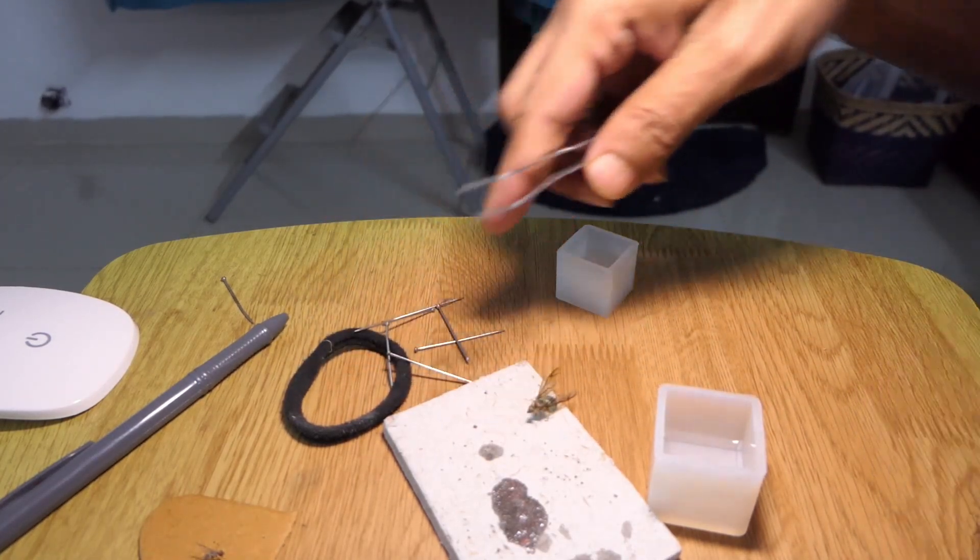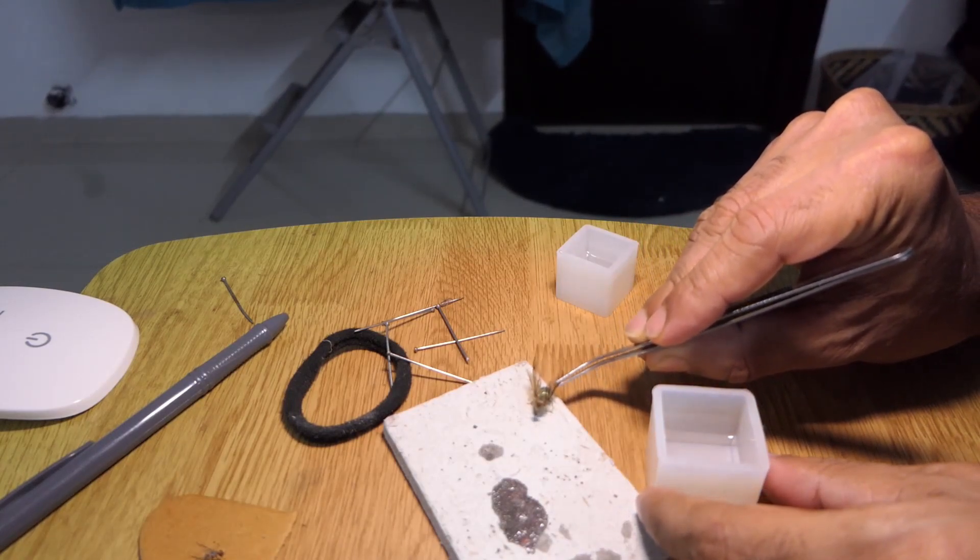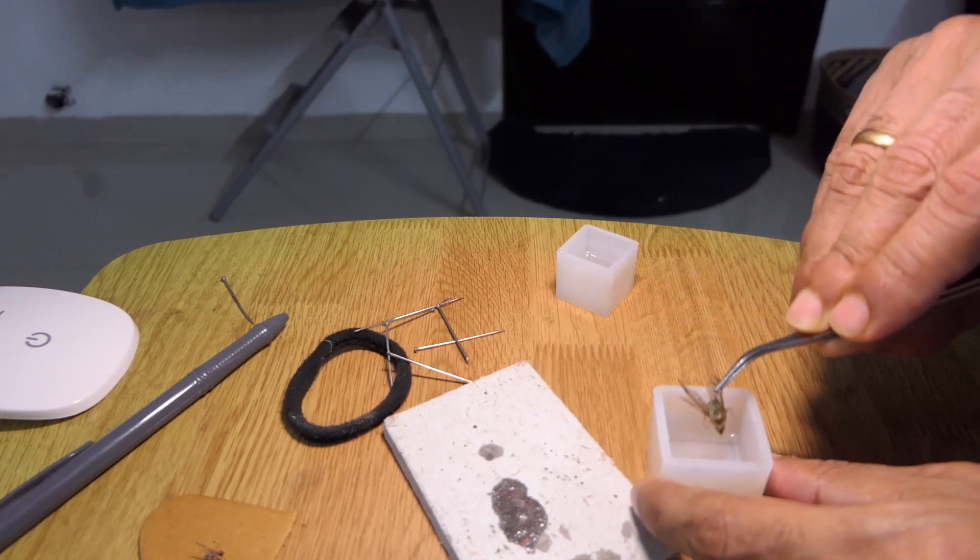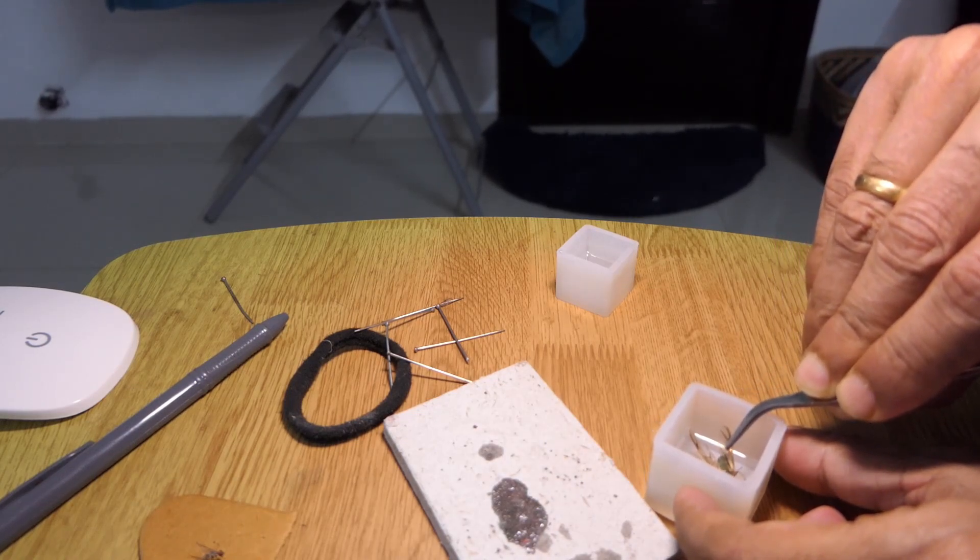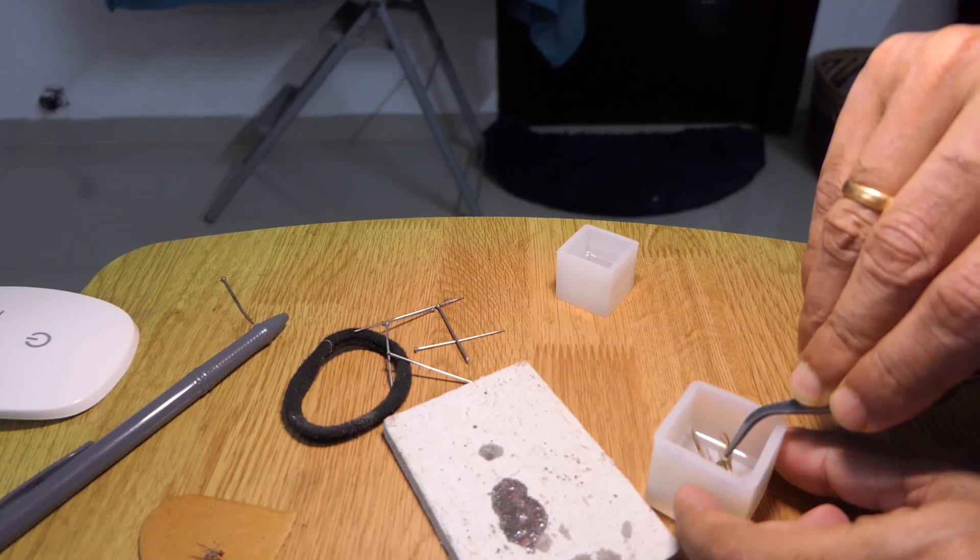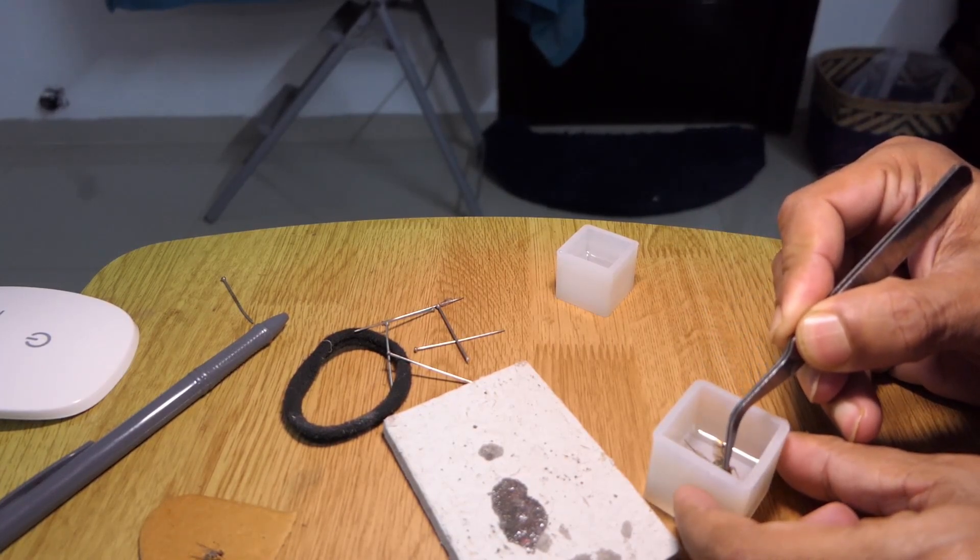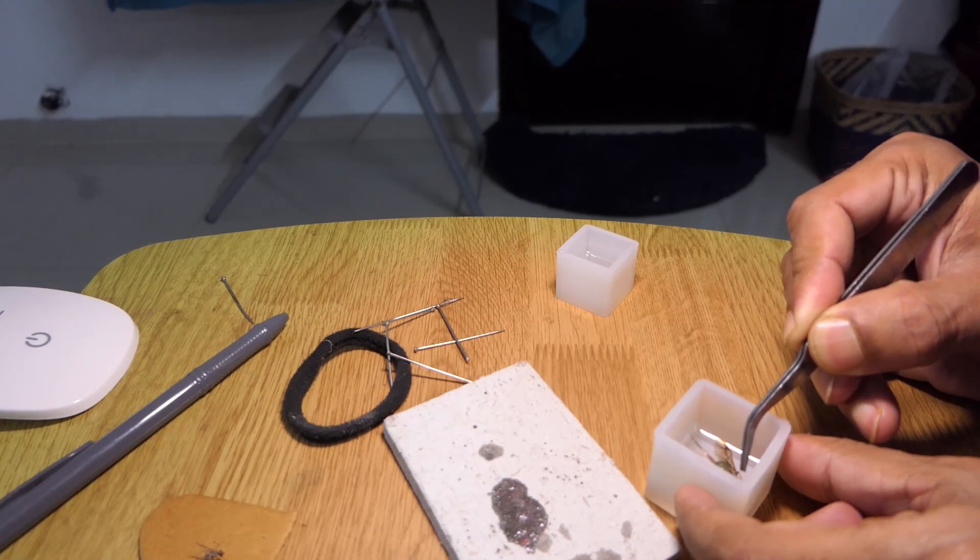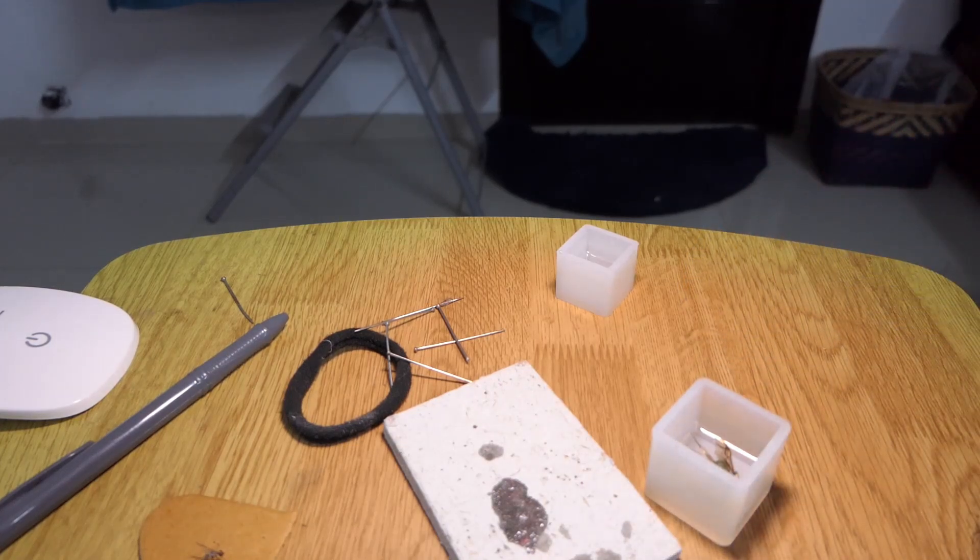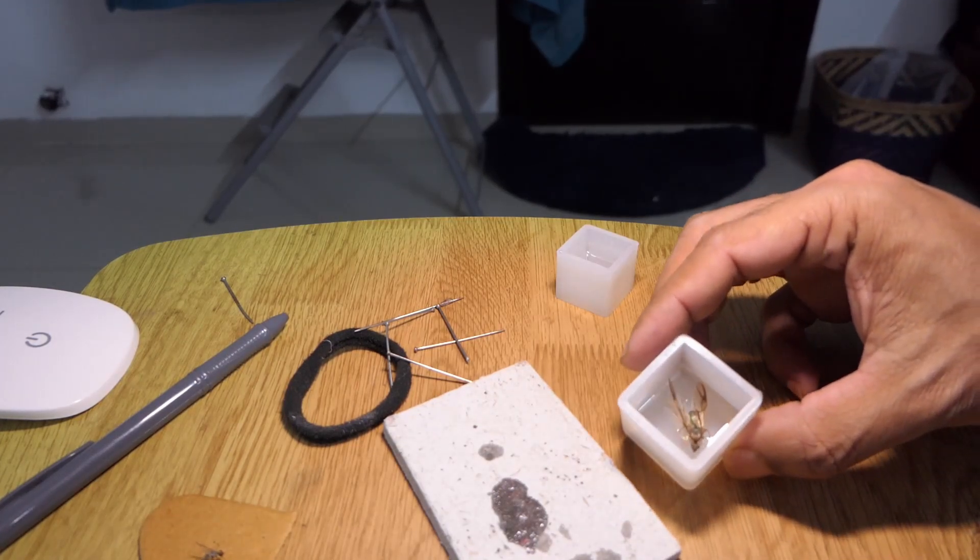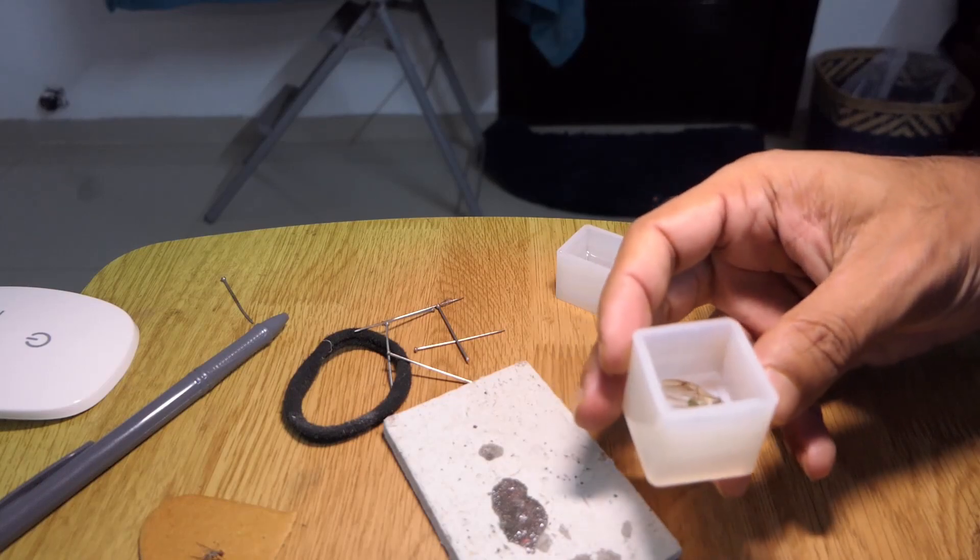This mold that I'm using is just about the right size. You can see it almost is the same width as the ant, so I'm going to place it diagonally so that there is some space around the edges. The trick is you just place it lightly on top so that the legs stick to the resin and hold it in position.